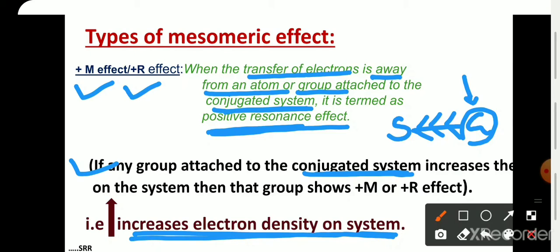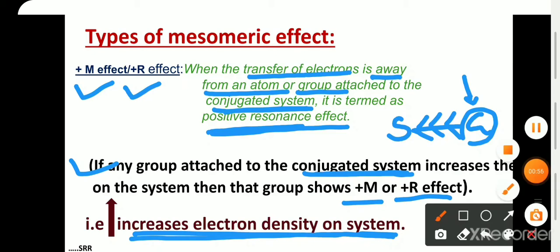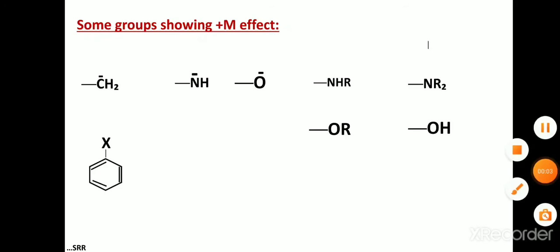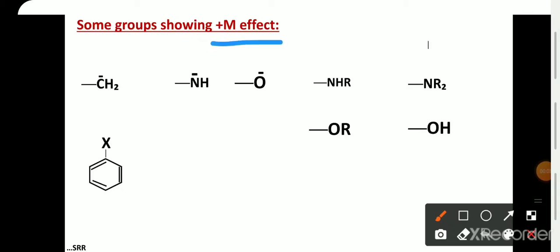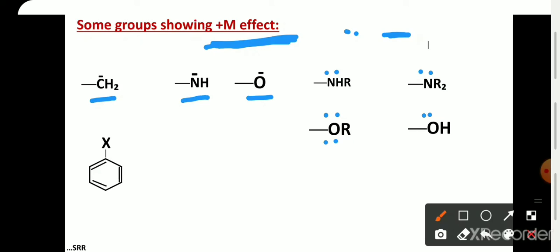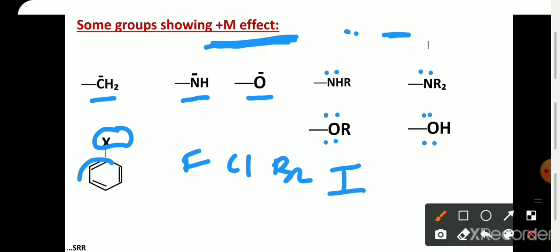These are some of the groups which show plus M effect. Atoms with lone pairs of electrons or negative charges mostly show plus M effect — for example, –CH₂–, –NH, –O⁻. Nitrogen has a lone pair and oxygen has a lone pair, so all these groups show plus M effect. Here X may be fluorine, chlorine, bromine, or iodine. When any of these groups is attached to a conjugated system, they increase the electron density on the system.